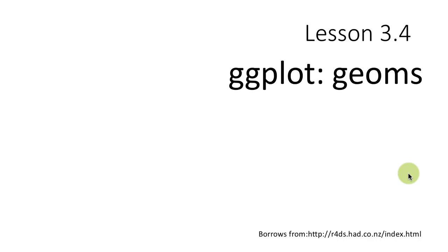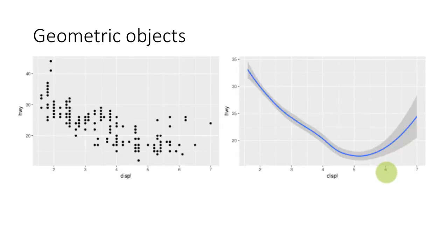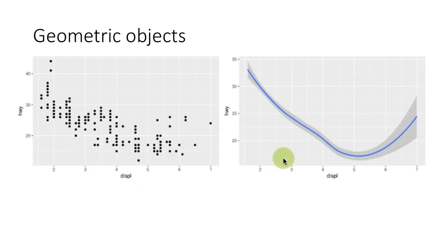Let us delve a little bit deeper into ggplot geoms. We have seen these two graphs before. It's the same set of data — on the left-hand side, we see a scatter plot of displacement versus highway miles using the MPG data frame. On the right-hand side, the same data is displayed differently in the form of a smooth line.